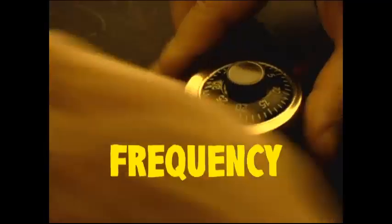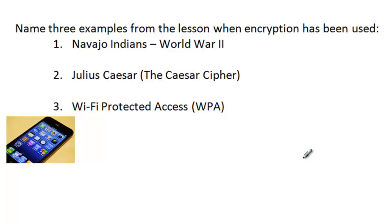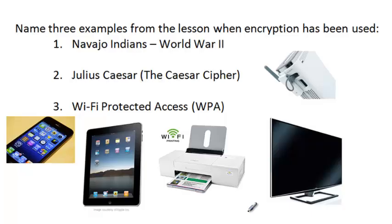The last real-world example is WPA — Wi-Fi Protected Access. Anything that uses Wi-Fi uses this: smartphones, iPads, printers, Xbox, TVs. If it's sending a Wi-Fi signal, you want it encrypted so that not anyone can access it and control your devices. That encryption has a very specific process. It's not exactly what we're doing today, but there are similar traits.